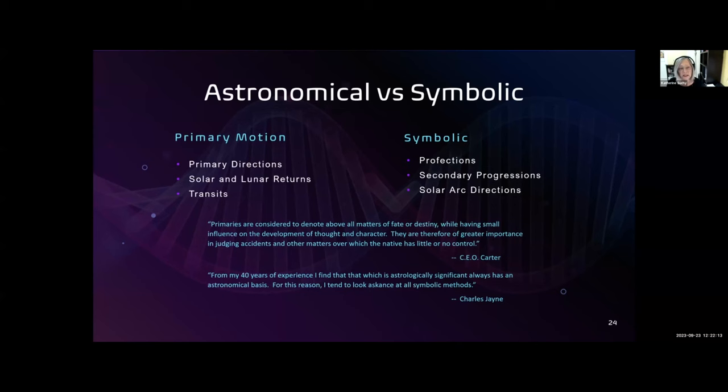This is just a short list of astronomical techniques for forecasting: the primary directions, solar and lunar returns, and transits. Others have been developed, notably by John Frawley and Charles Jayne, in modern times. Some of the symbolic methods are perfections, secondary progressions, and solar arc directions.